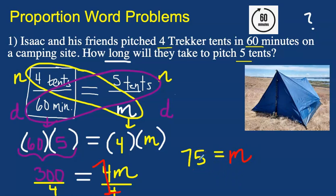So let's look back and think about what that means. We found that m is equal to 75. So that means that it takes 75 minutes to set up 5 tents. We know that it represents minutes because over here we had minutes. So in this denominator, our number also represents minutes. So our answer is 75 minutes. And we answered the question, how long will they take to pitch 5 tents? It will take them 75 minutes.